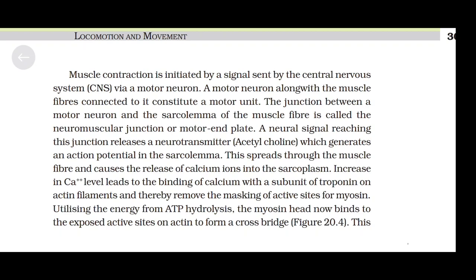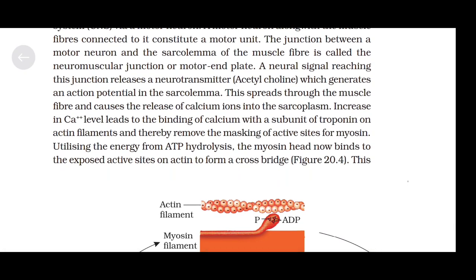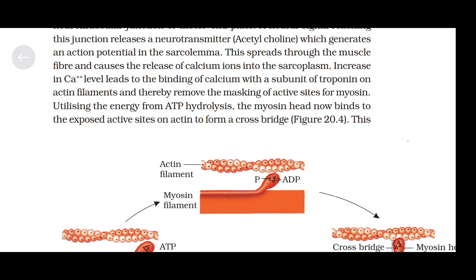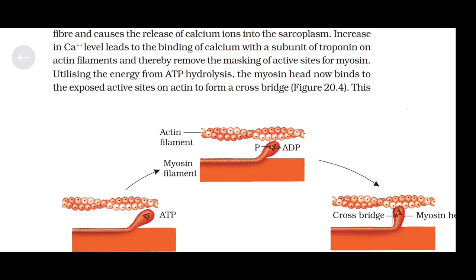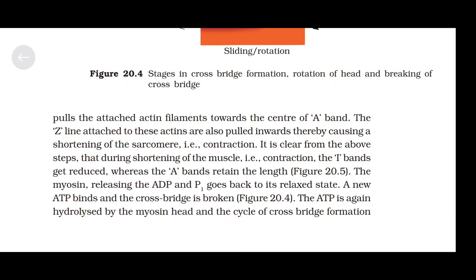A neural signal reaching this junction releases a neurotransmitter acetylcholine, which generates an action potential in the sarcolemma. This spreads through the muscle fiber and causes the release of calcium ions into the sarcoplasm. Increase in Ca²⁺ levels leads to the binding of calcium with a subunit of troponin on actin filaments, thereby removing the masking of active sites for myosin. Utilizing energy from ATP hydrolysis, the myosin head binds to the exposed active sites on actin to form a cross bridge. This pulls the attached actin filaments towards the center of the A-band. The Z-lines attached to these actins are also pulled inwards, causing a shortening of the sarcomere — that is, contraction.